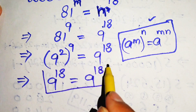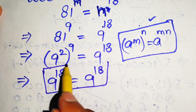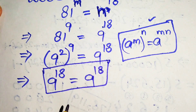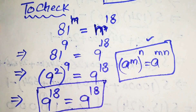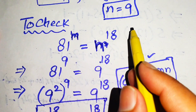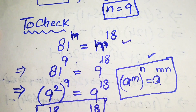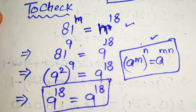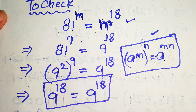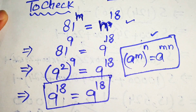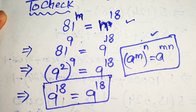The left hand side equals the right hand side, confirming that n equals 9 satisfies the given equation. This shows that n equals 9 is the only solution of this problem. Thank you so much for watching this video — please subscribe to my channel for more exciting videos.